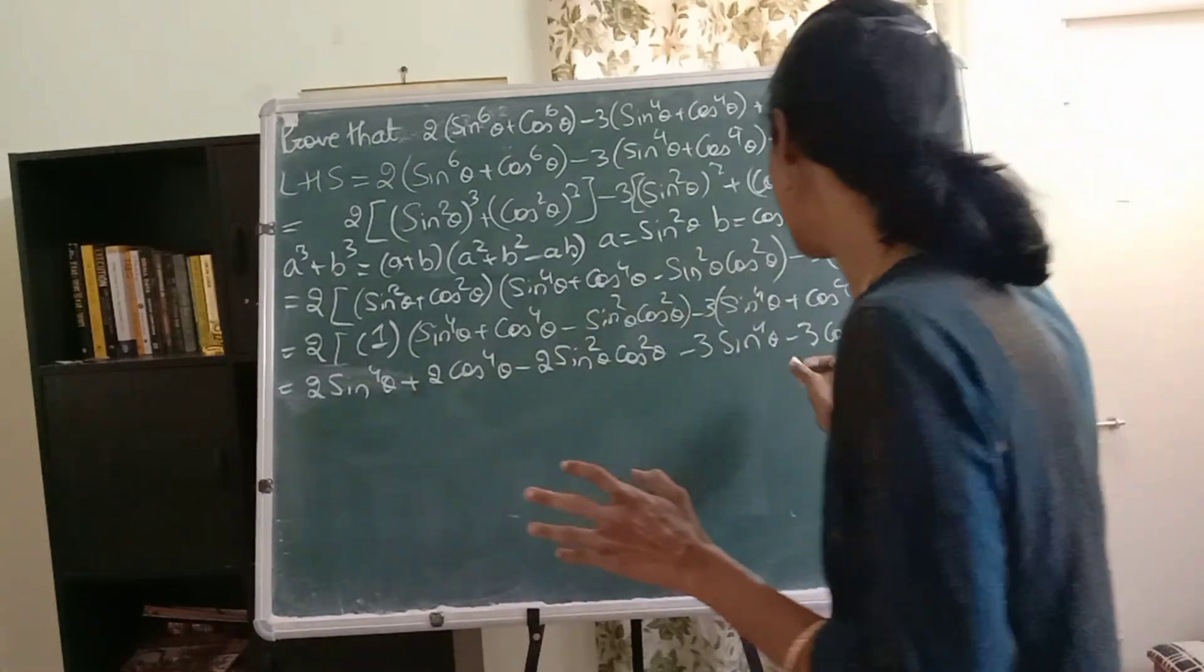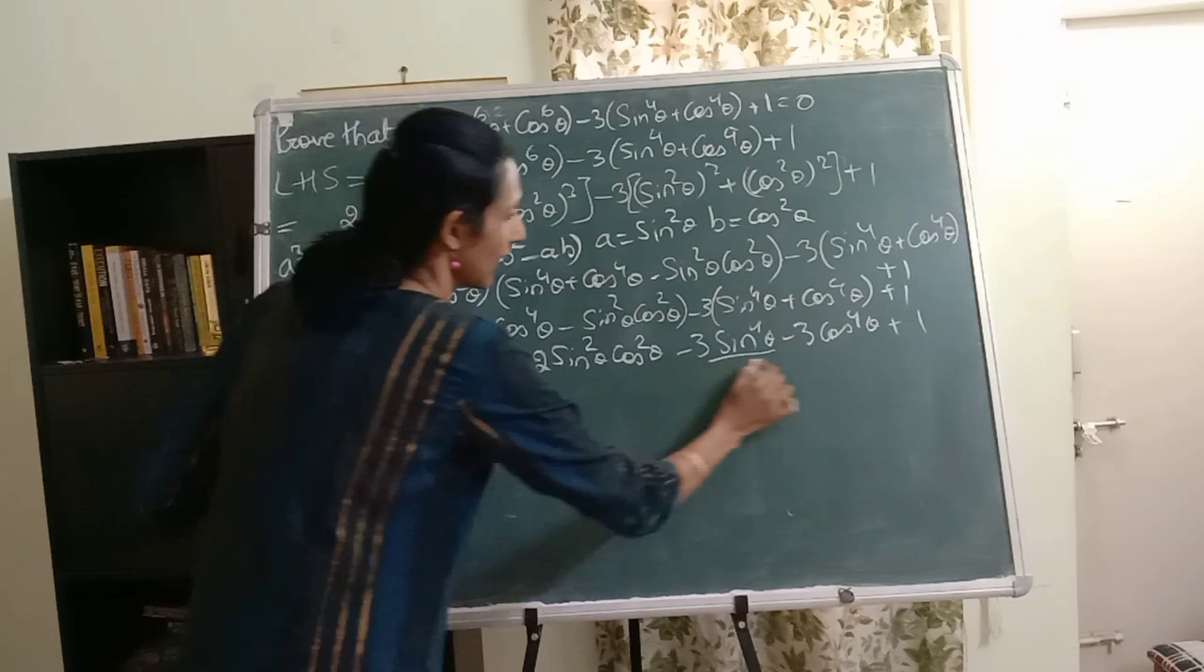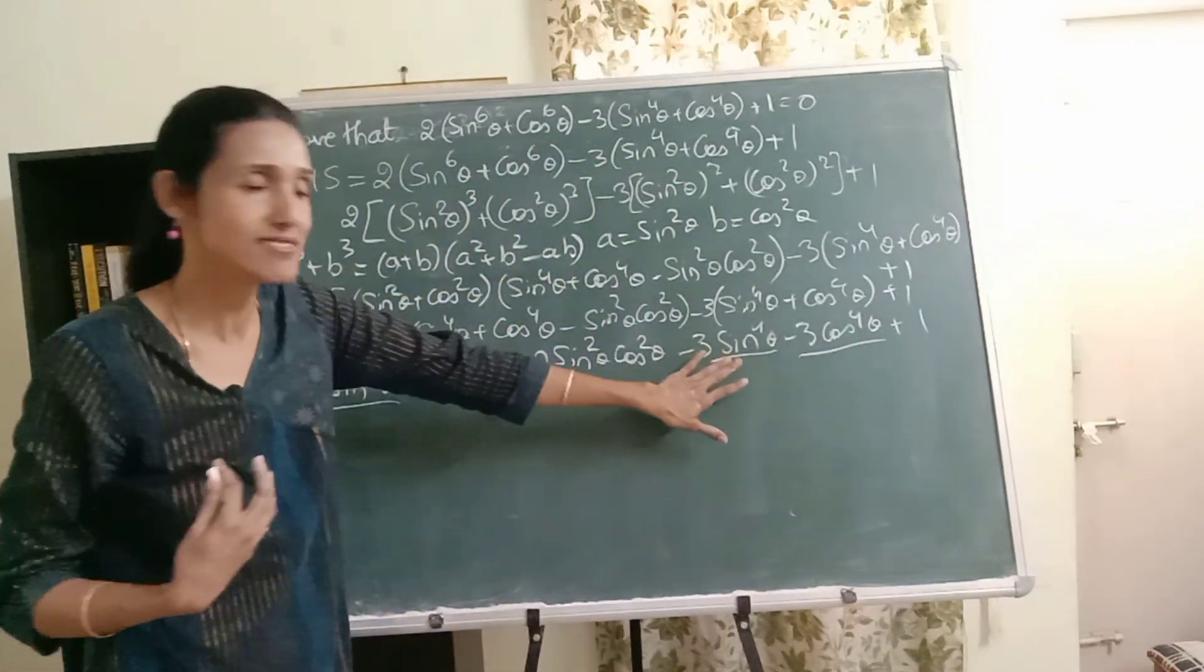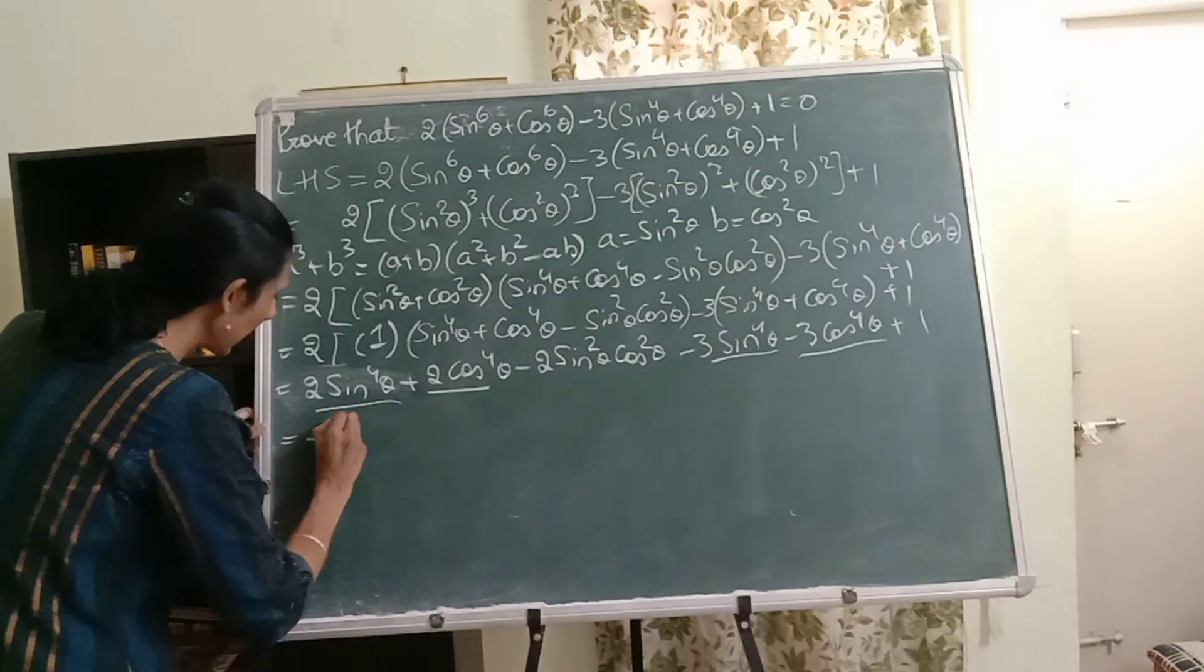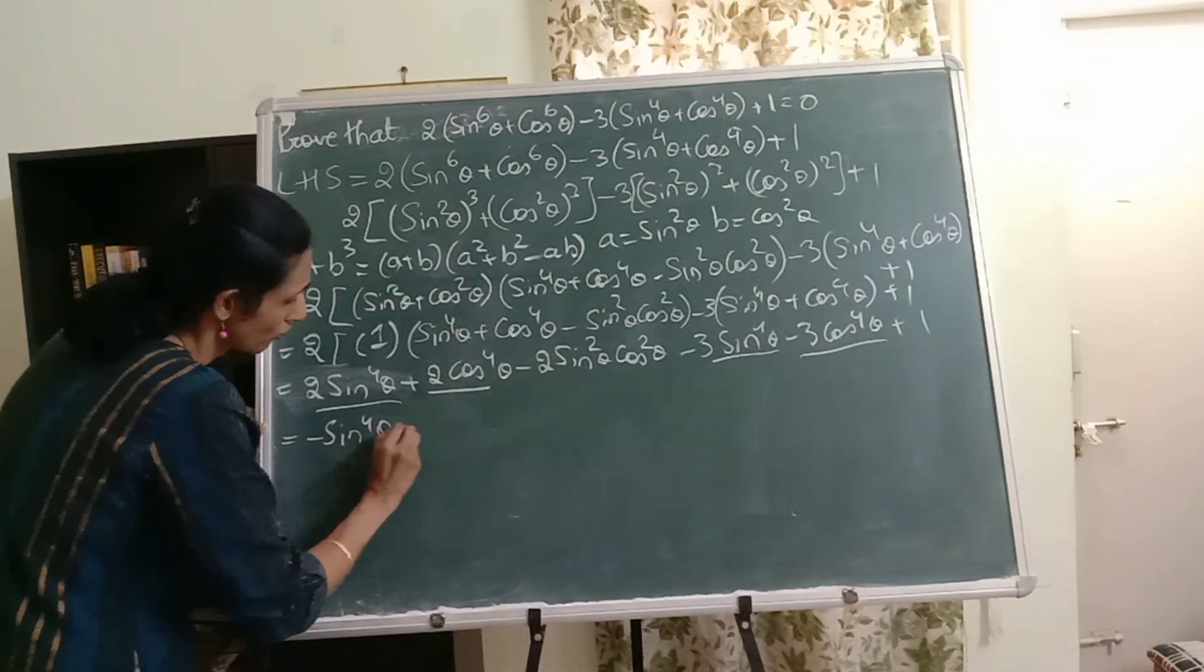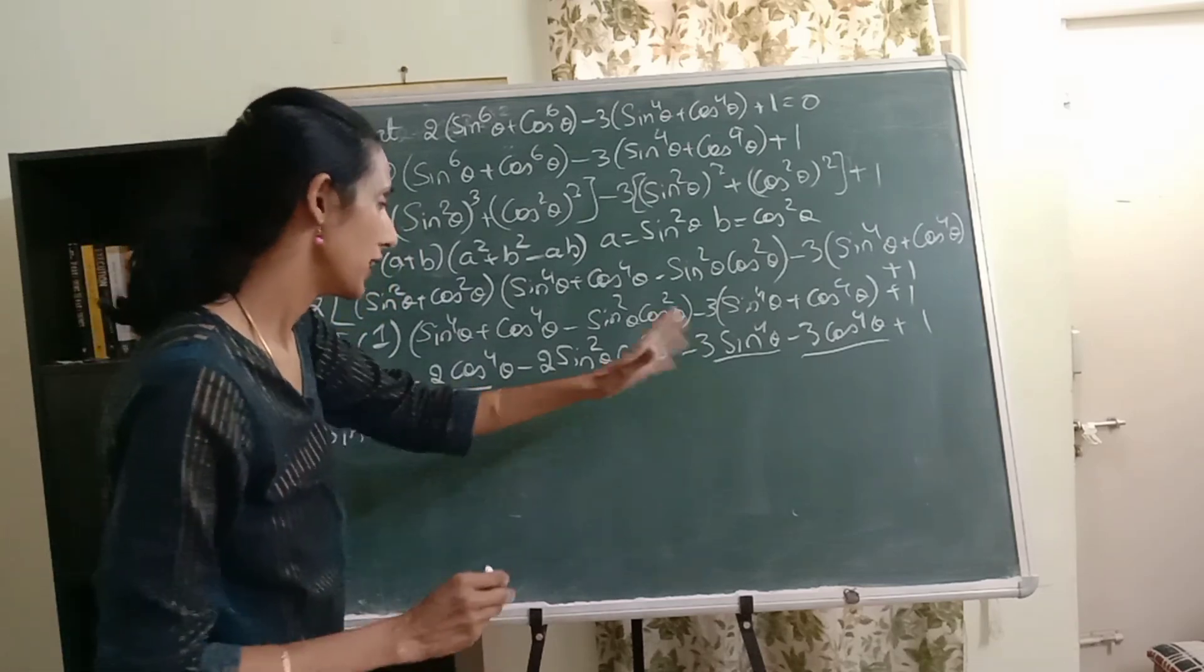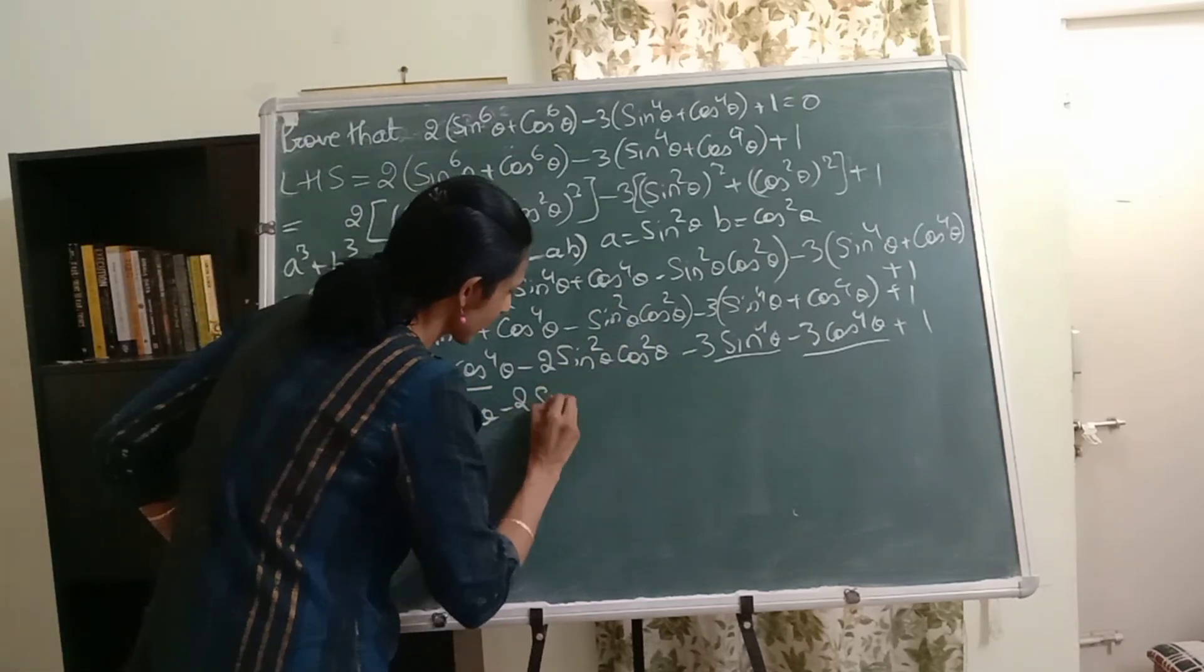Here also I have to bring minus 3 inside. So minus 3 sine raised to 4 theta minus 3 cos raised to 4 theta plus 1. That's done. We have a like term over here and a like term over here. So let's club them together. So 2 sine raised to 4 minus 3 sine raised to 4. What do we get? Minus sine raised to 4 minus cos raised to 4. We can't do anything about this. I'll just write it as it is.